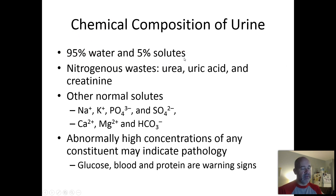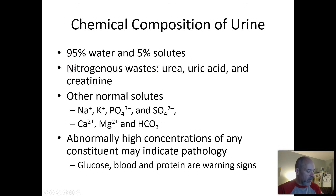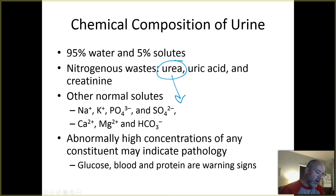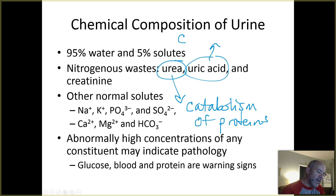On average, only about 5% of the urine volume consists of solutes, depending on how diluted the urine is. Those solutes include nitrogenous wastes. Three important nitrogenous wastes include: urea, which is a waste product from catabolism of proteins; and uric acid, which comes from catabolism — the breakdown — of DNA and RNA.